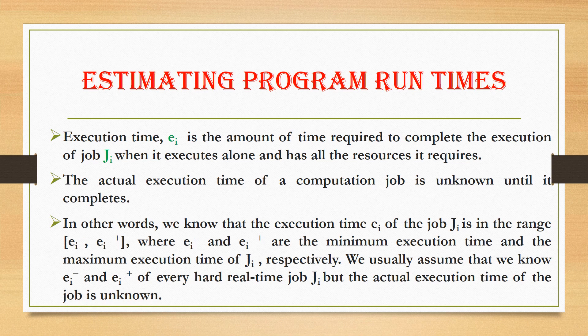First, let us know what is execution time. Execution time is the amount of time required to complete the execution of a job. In general, J-i is the job and E-i is the execution time of that job. Actual execution time cannot be computed until the job is completely executed. We can determine the execution time within a range: E-i minus is the minimum execution time and E-i plus is the maximum execution time. From this, we can estimate the program runtimes.